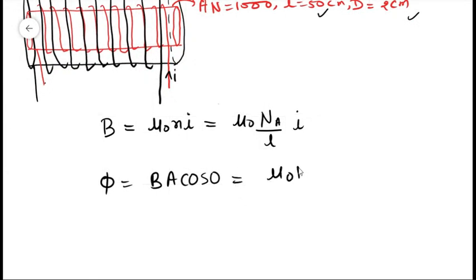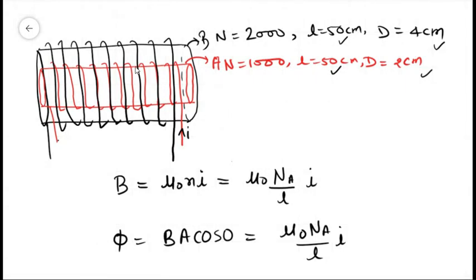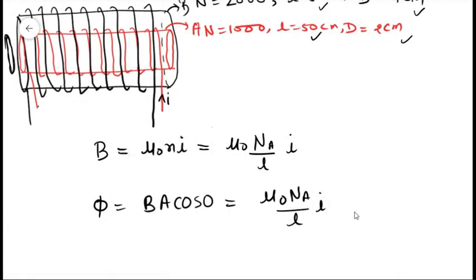So this will be μ₀NA over L into I, and A is the area of the region where the magnetic field is present. But the magnetic field is present only in this region, so the area of this region will be πR². R is the radius of the inner loop which is D by 2 to the whole square, and D is the diameter of the inner solenoid.